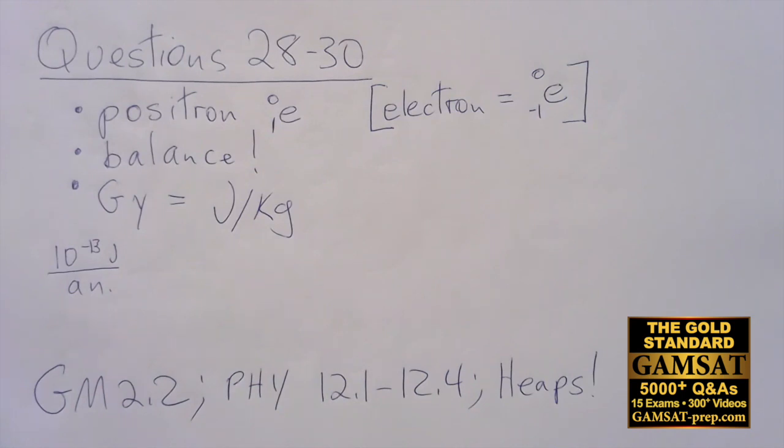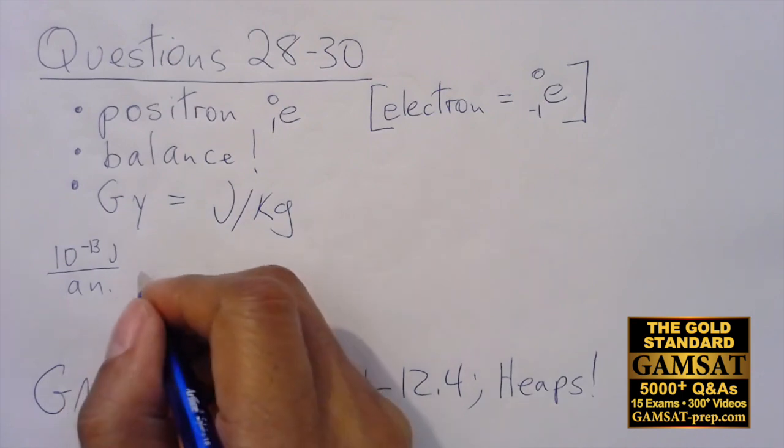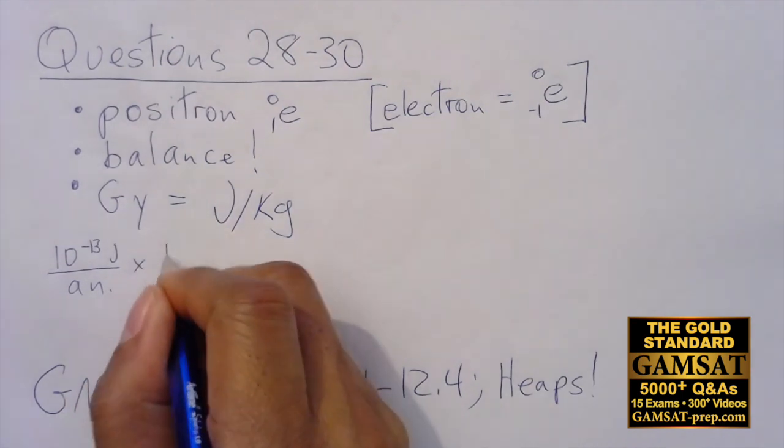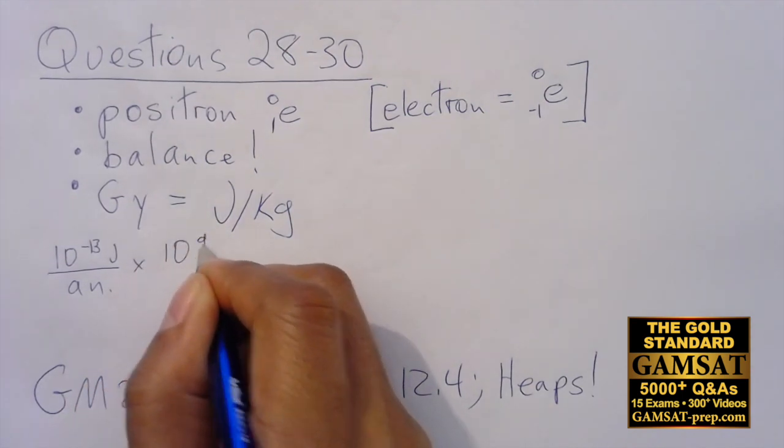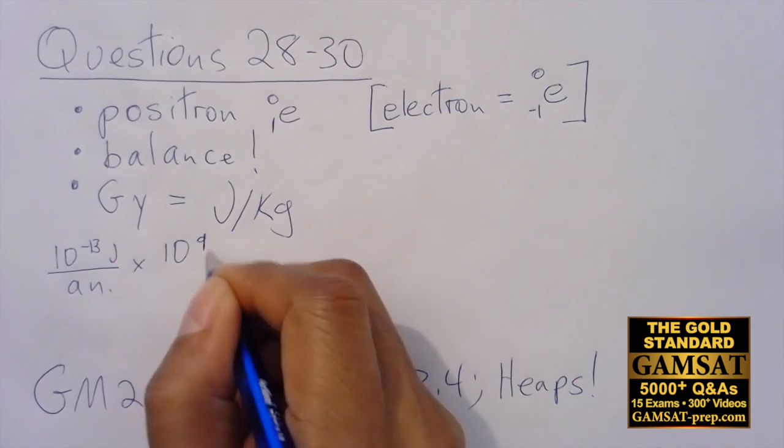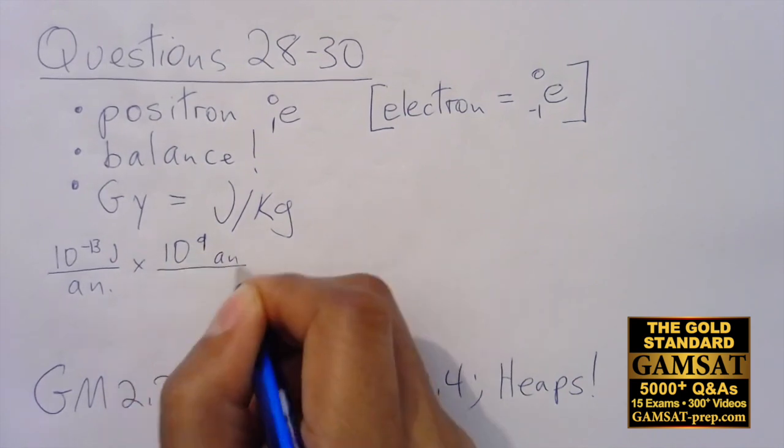That's what it means mathematically, that the average energy from a single annihilation is approximately 10 to the minus 13 joules per annihilation. And there's an average of 10 to the 9 annihilations per second, so I'm going to multiply this by 10 to the 9 annihilations per second.